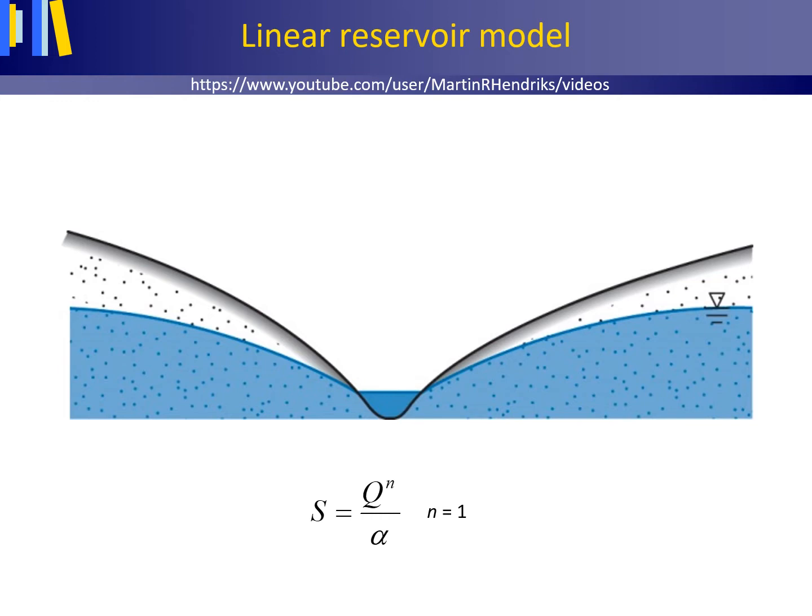A linear reservoir is defined as a reservoir for which the relation between storage and outflow or discharge from the reservoir is linear, thus with n equals 1 in the more general equation presented in my textbook for the flow of water from water-filled reservoirs, as shown here.